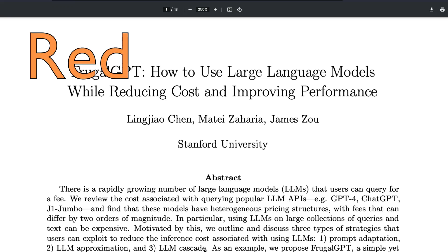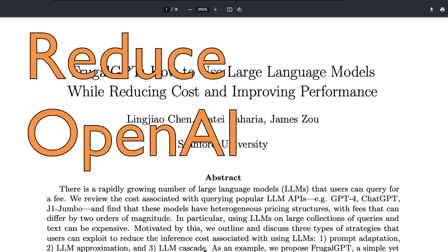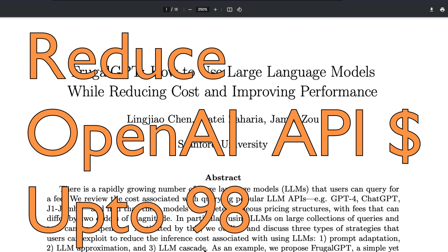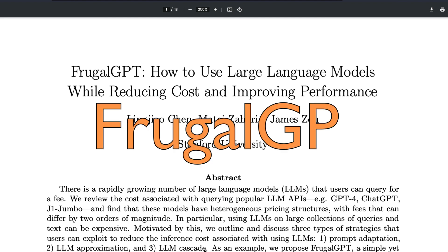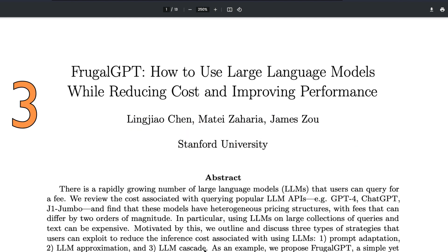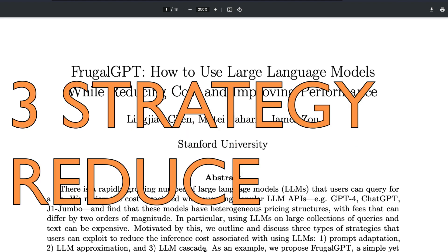If you are using OpenAI APIs and if there is a way to reduce up to 98% of your API cost, would you not like it? That's exactly what FrugalGPT is. In this video, I would like to break down the three-step process that is introduced in this paper called FrugalGPT.